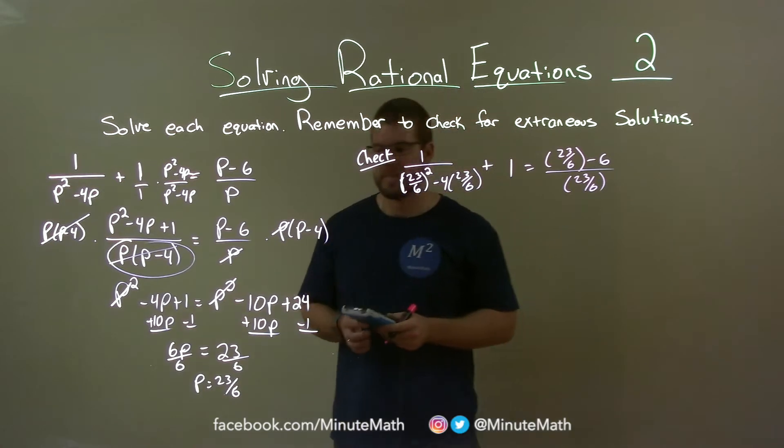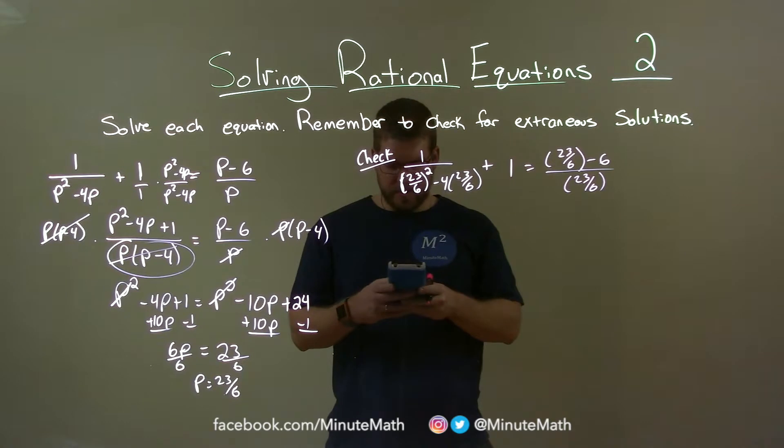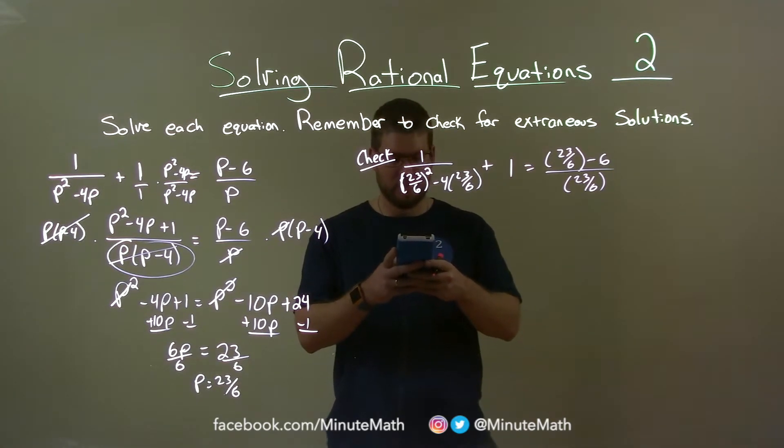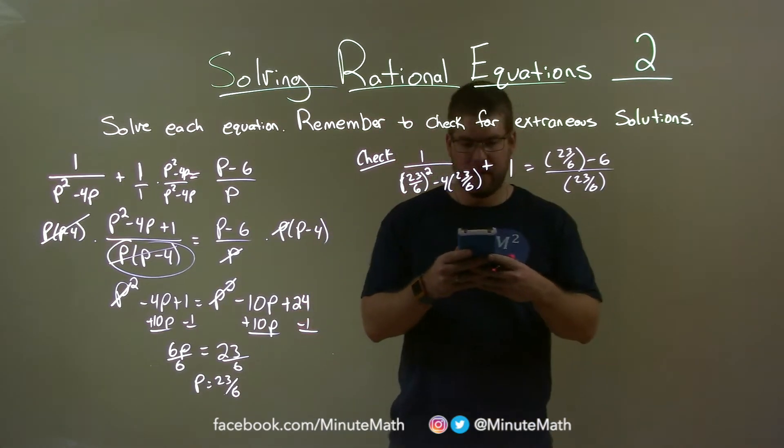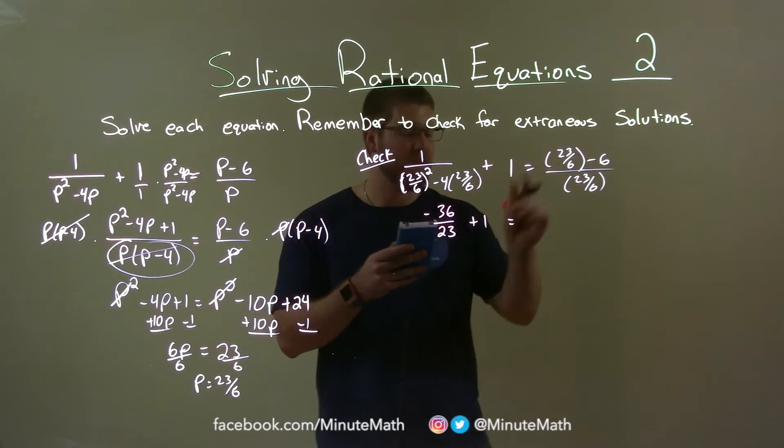So now I'm going to do this fraction here. I have 1 divided by 23 over 6 squared minus 4 times 23 divided by 6, and that as a fraction is negative 36 over 23, and we have plus 1 equals this one here,